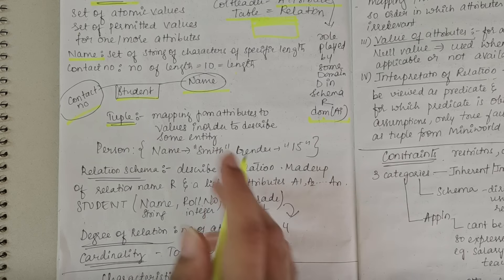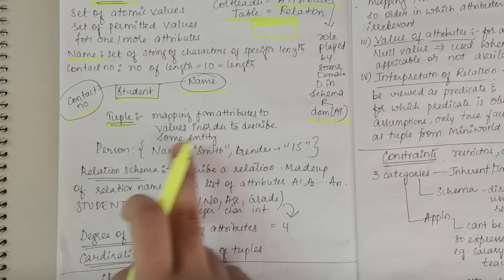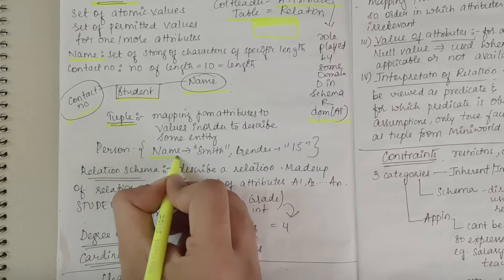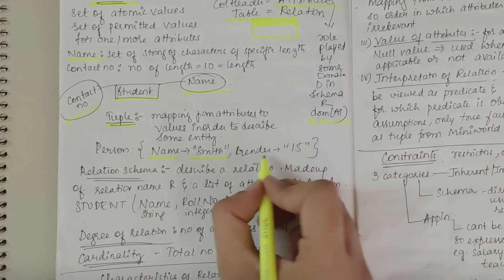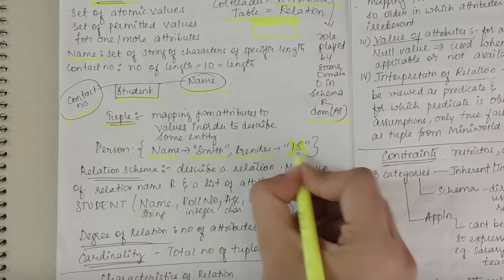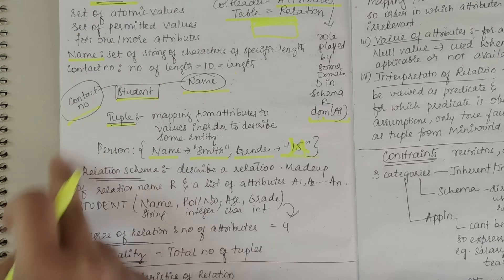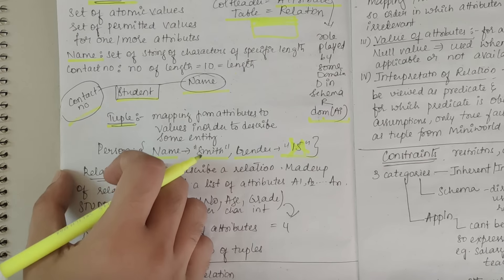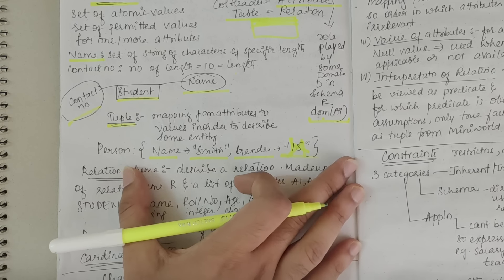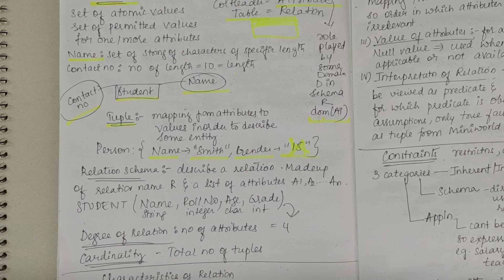Next we have tuple. Tuple is a mapping from attributes to values in order to describe some entity. For example, name is mapped to 'Smith' and gender is mapped to 'male'. Person is that particular entity, and the attribute has these values. So mapping those values is a tuple.